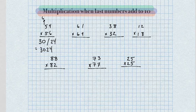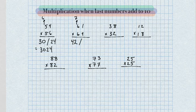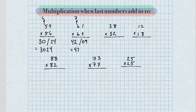On the next problem, we take the next number up from 6, which is 7. So for the left-hand side, we multiply 6 by 7 to get 42. And for the right-hand side, 1 times 9 gives us 9. So our answer is 4,209.